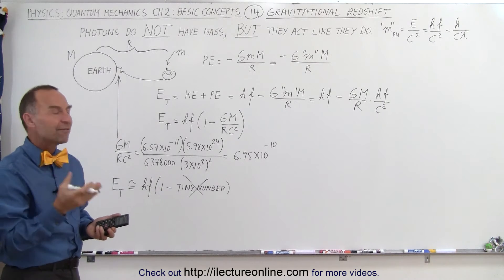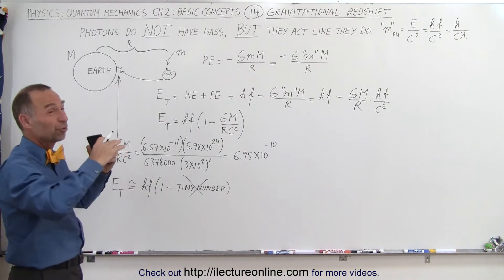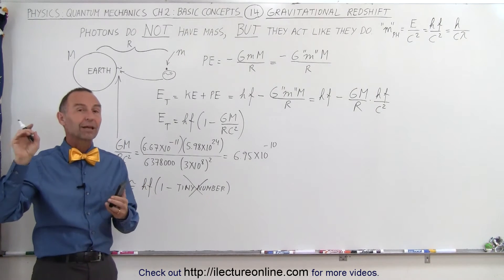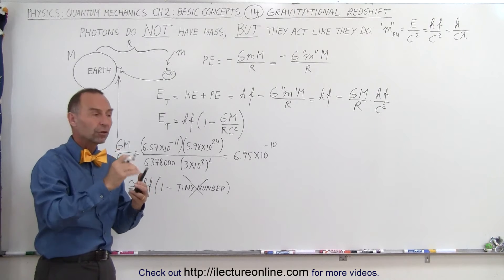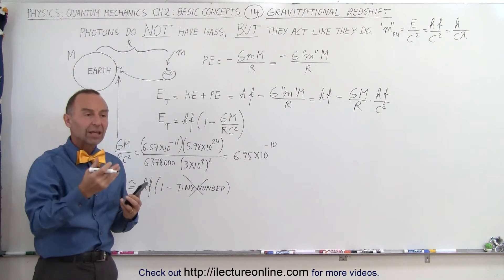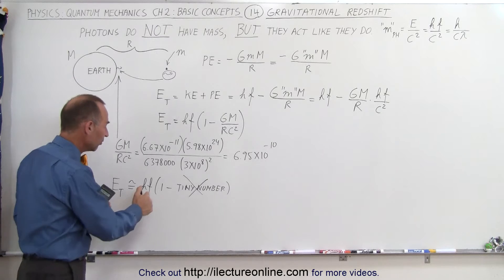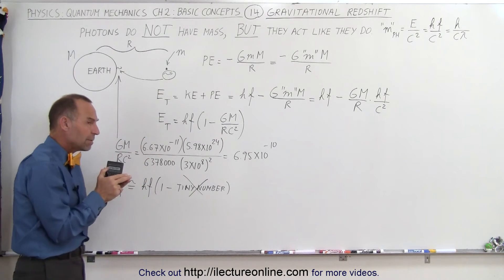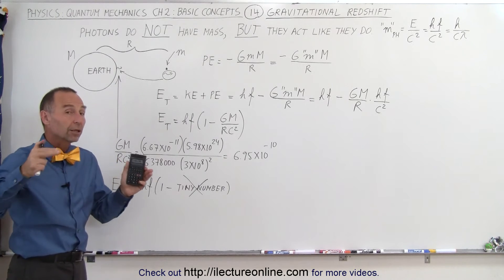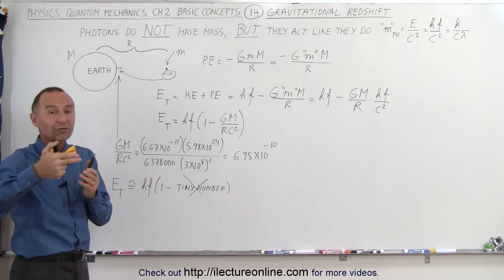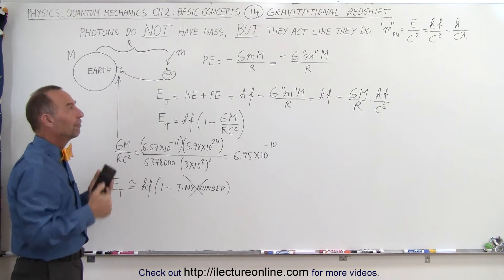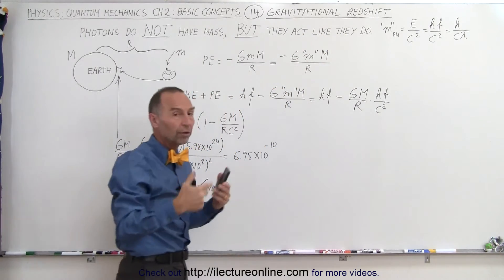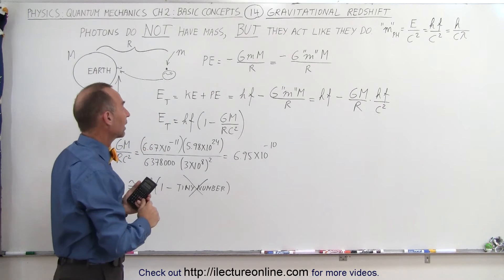What if the photon came from the sun? The sun is a much bigger object with a much stronger gravitational force, and by the time that photon reaches the earth, it will have lost some of its energy. That means the frequency becomes a little smaller, the wavelength gets a little longer, which shifts it toward the red end of visible light — that's what we call the redshift caused by the gravitational pull of the sun. Let's work that out.